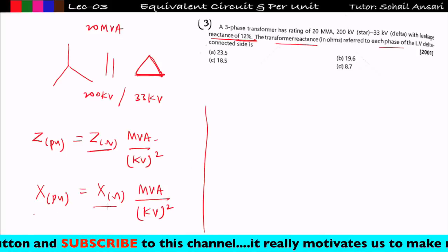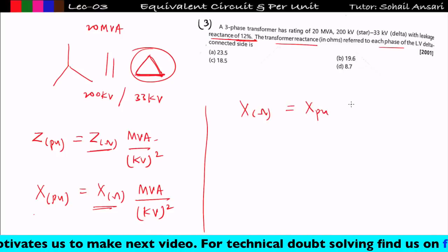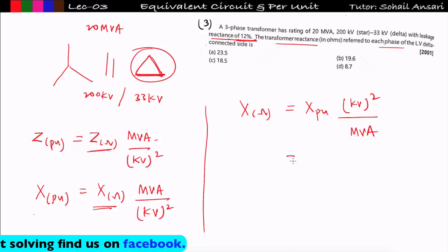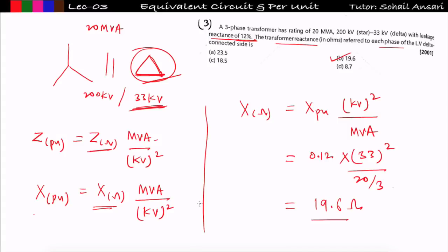For the delta (LV) side, line voltage equals phase voltage = 33 kV. X in ohm = X_per_unit × (V_phase)² / (MVA_per_phase) = 0.12 × (33,000)² / (20/3 × 10⁶) = 19.6 Ω. Option B is correct.